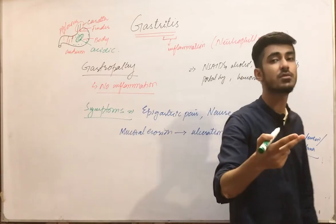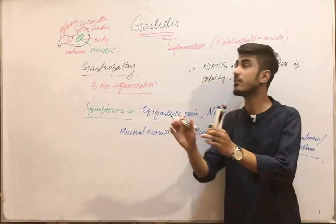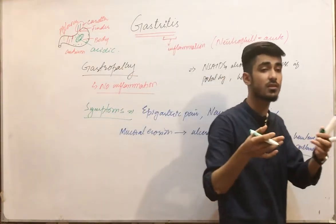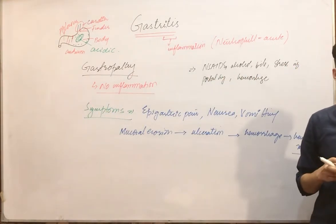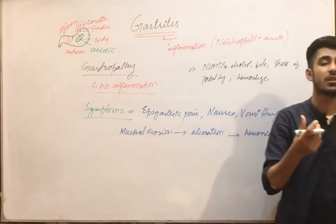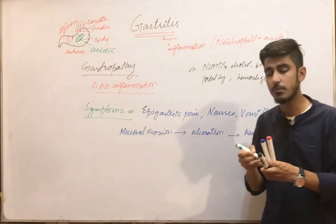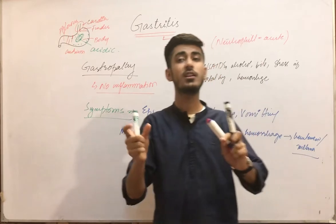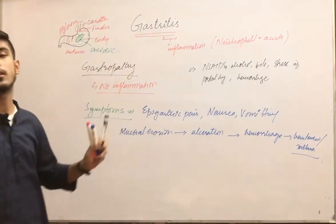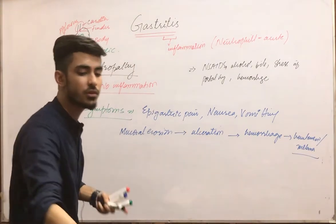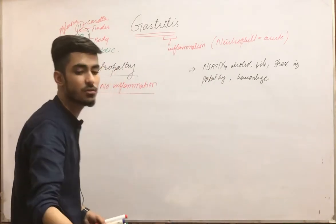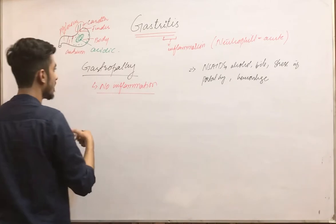There are certain defense mechanisms of the stomach itself to protect it from the acidic secretion in the stomach lumen. In pathogenesis, we will study these normal defense mechanisms. If there is a defect in them, it will obviously lead to gastritis or gastropathy.